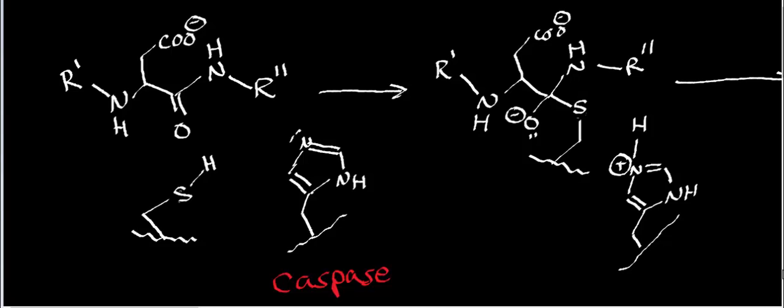It should be the one right before this in the playlist. What we determined is that caspases specifically target the C-terminal peptide bond that's adjacent to the alpha carbon of aspartate residues. What you must remember about proteases is that they're specifically targeting a carboxylic acid derivative known as an amide bond — they're targeting the amide bond.